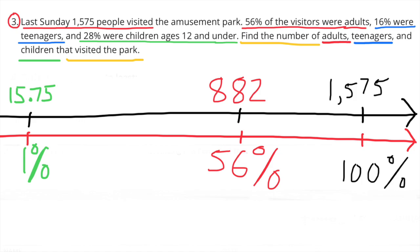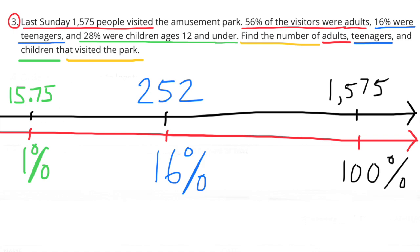I used the value for 1% to find 56%, 16%, and 28%. To find the adults, I multiplied 15.75 times 56, which gave me 882. There were 882 adult visitors. For teenagers, I multiplied 15.75 times 16, and that gave me 252 teenagers that visited the park.